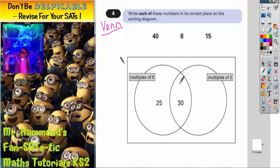But what's not labelled is the overlapping bit. And the overlapping bit must be both multiples of 5 and multiples of 2. So if it's both in the 5 times table and the 2 times table, it has to go in the overlapping bit there.